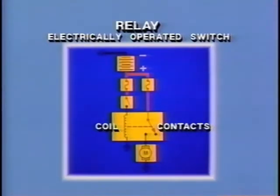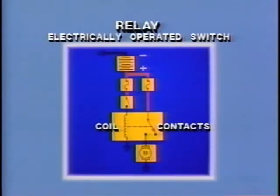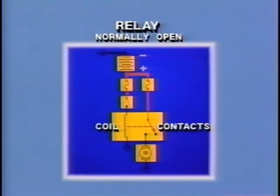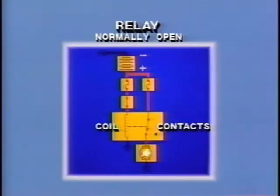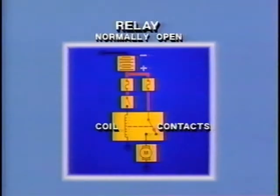A relay is an electrically operated switch. Inside the relay are an electromagnetic coil and sets of contacts. A control circuit opens and closes a power circuit. The contacts of this relay are spring-loaded in the open position — this is called a normally open relay; other relays are normally closed. When the control side of the circuit activates, a magnetic field builds around the coil. As the magnetic field strength overcomes the spring tension, the contacts are pulled toward the electromagnet, closing the contacts and switching on the power side of the circuit. When the control circuit current stops flowing, the magnetic field collapses and the contacts open under spring tension.